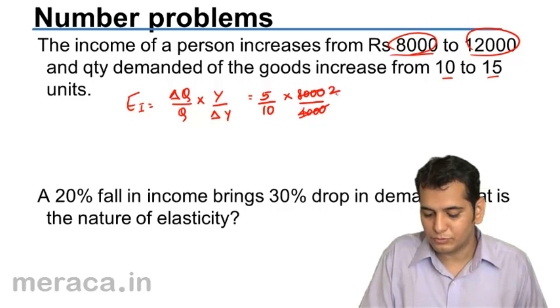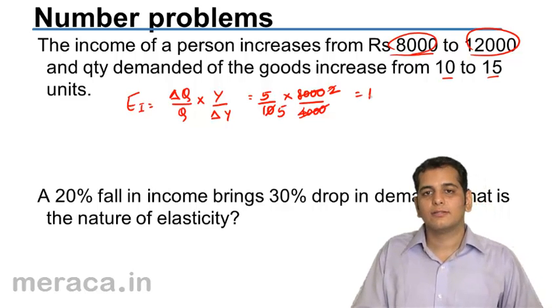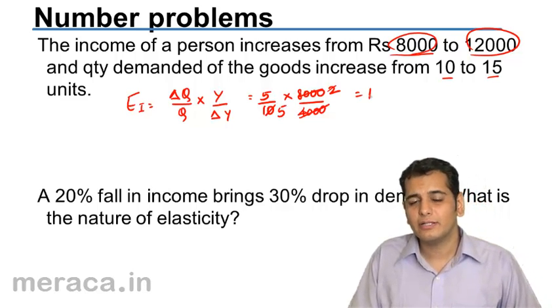So, after solving this we get 1 that is unitary income elasticity.